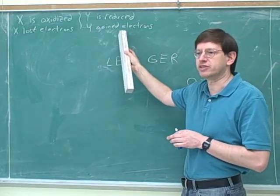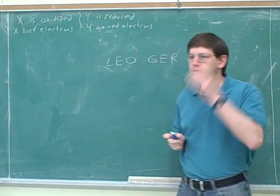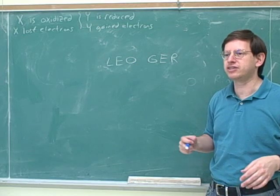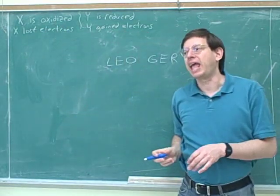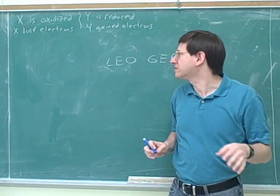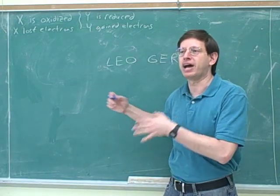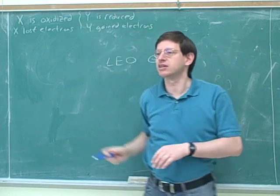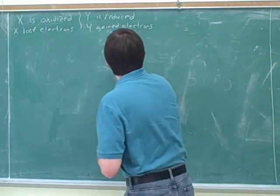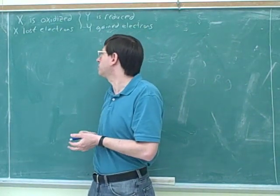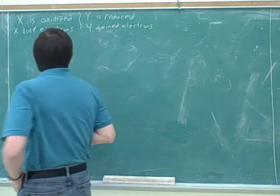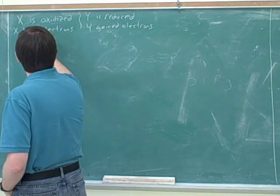Oxidation also means gaining bonds to oxygen and other electronegative elements. You can see why that's the same thing — if you're gaining bonds to electronegative elements, they take the electrons away from you. It also tends to mean a loss of hydrogens. I mention this for completeness, but those definitions are more useful in organic chemistry and biology. In general chemistry, we focus on the electron definitions. For completeness: oxidation means gaining bonds to electronegative elements and losing bonds to hydrogen, while reduction means the opposite. But for general chemistry, focus on the electrons.